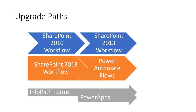We couldn't run parallel versions, so for smaller approval-based workflows — two or three levels deep — we developed both a 2013-style workflow and a Power Automate flow simultaneously. Over the following weeks, the number of 2013-style workflow interactions slowly declined, and eventually users came back and said that people were now comfortable approving items and taking actions via email rather than through task forms.